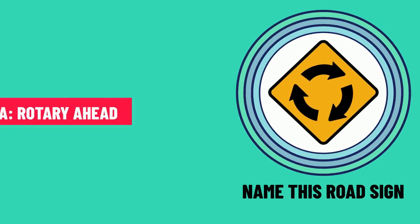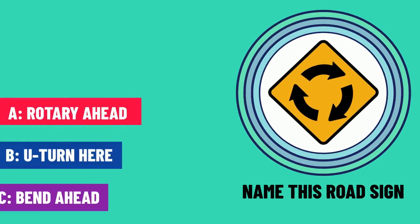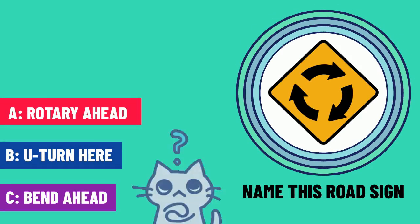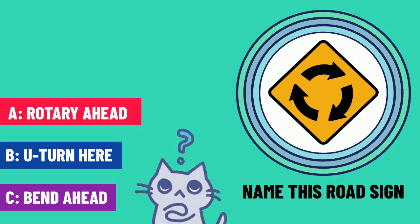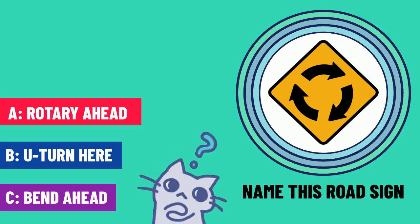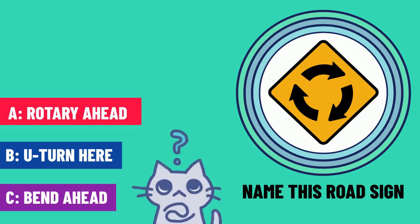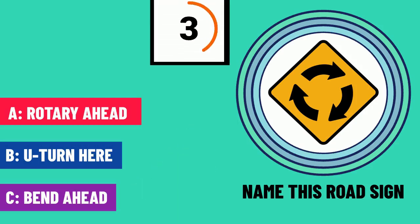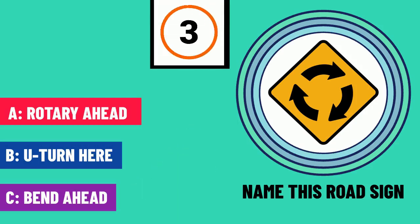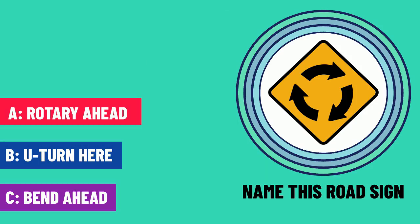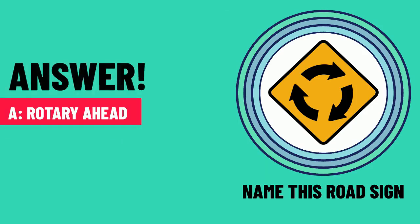Question 2. Name this road sign. The answer is A — rotary ahead.